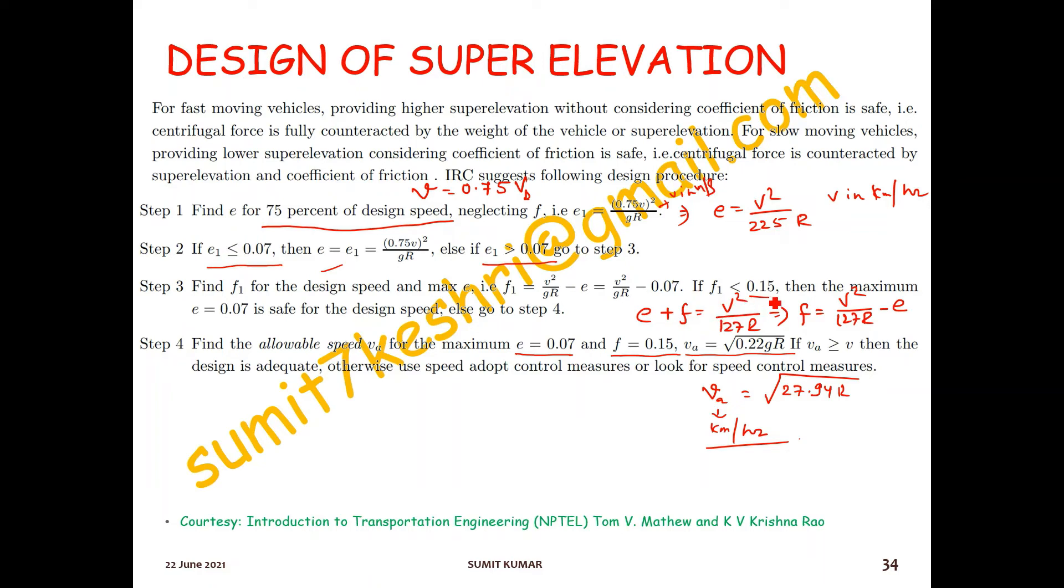And if you get f is more than 0.15, then what you do is keep e equal to 0.07 and f equal to 0.15, and then find velocity. Then change the design speed by this formula: root over 27.94r. So these were very simple steps for finding super elevation.